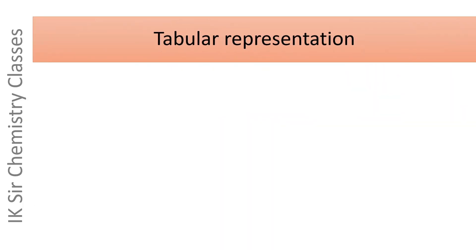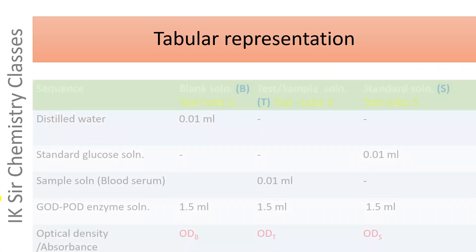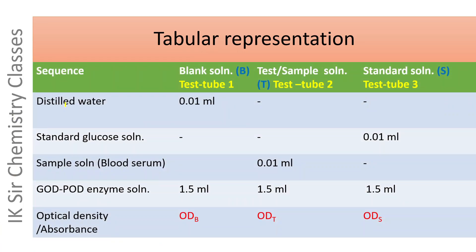Tabular representation of the processes carried out. This is the sequence of adding various reagents and processes. In test tube number 1, blank solution is taken, denoted by B. It contains 0.01 ml distilled water and 1.5 ml GOD-POD enzyme solution. These two solutions are mixed well, incubated at 37 degrees centigrade for 25 minutes, and the optical density is measured at 500 nanometers — represented as ODB, that is optical density of the blank solution.